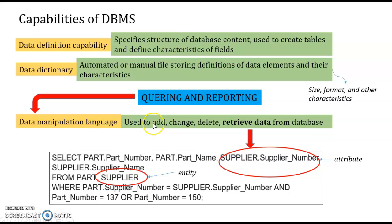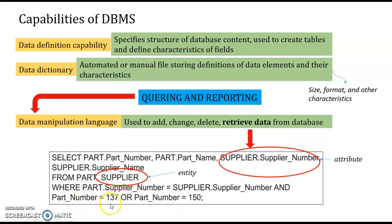Data Manipulation Language can be used to add, change, or delete data from a database. For example, in SQL you can see here — the SELECT...FROM...WHERE is the instruction. This refers to the table entity and its attributes, such as SELECT part.part_number (entity.attribute). The larger structure here is what we call the entity.